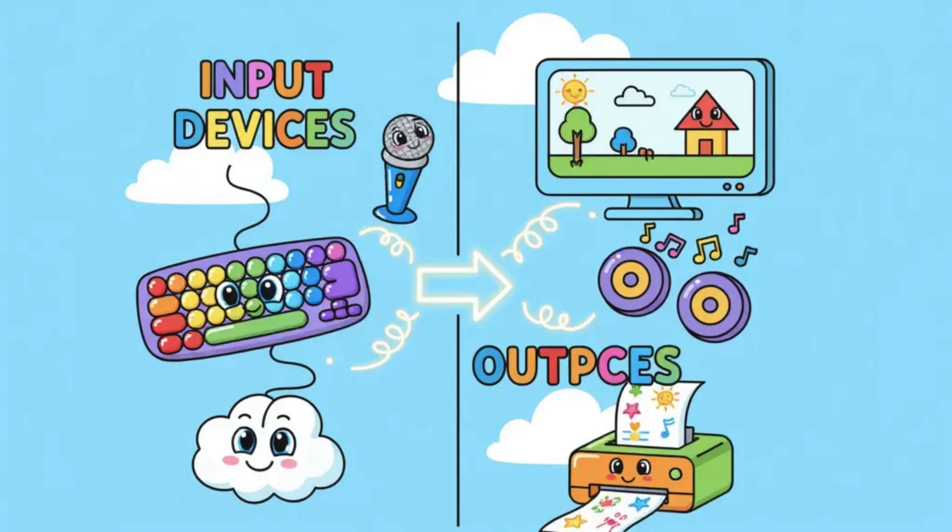Think about the keyboard, which lets you type letters, numbers, and symbols. With it, you can write messages, create documents, or enter information into a game. Then imagine the mouse, which allows you to move the pointer on the screen. Click, drag, and interact with programs and images.